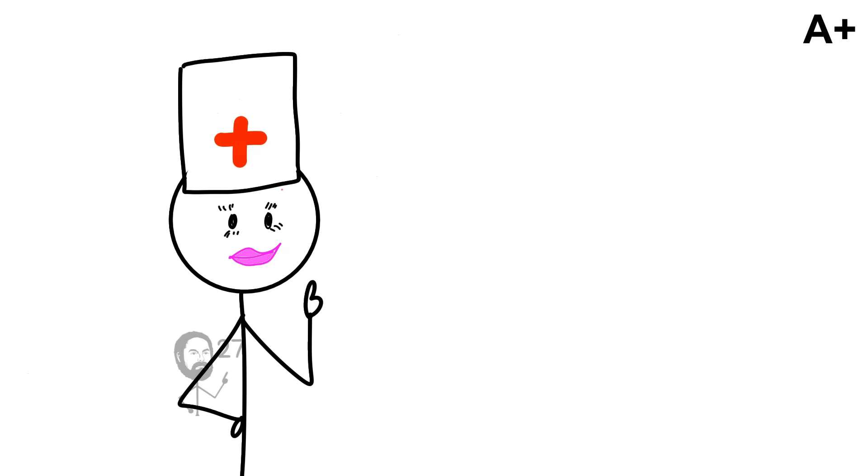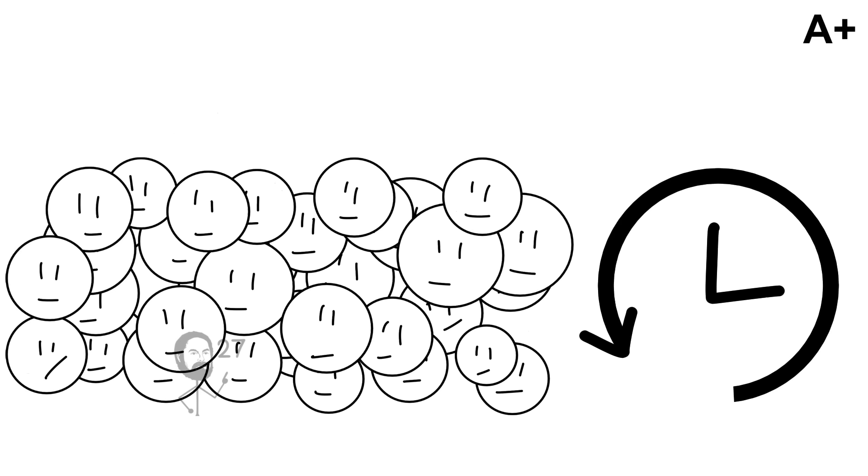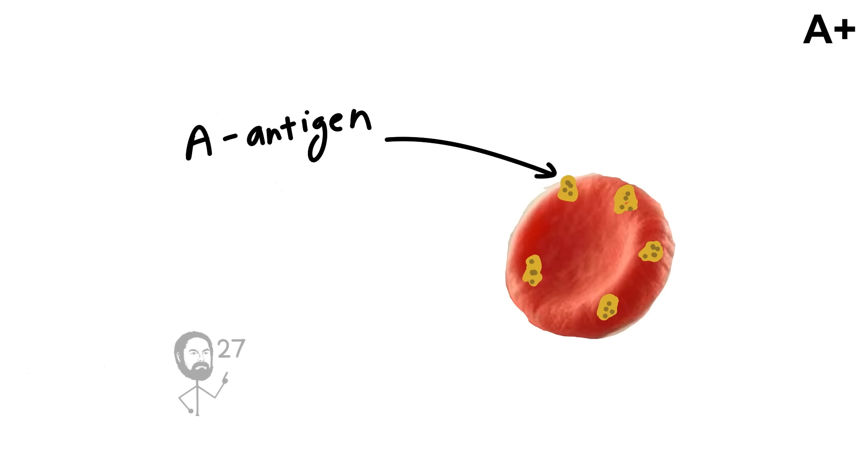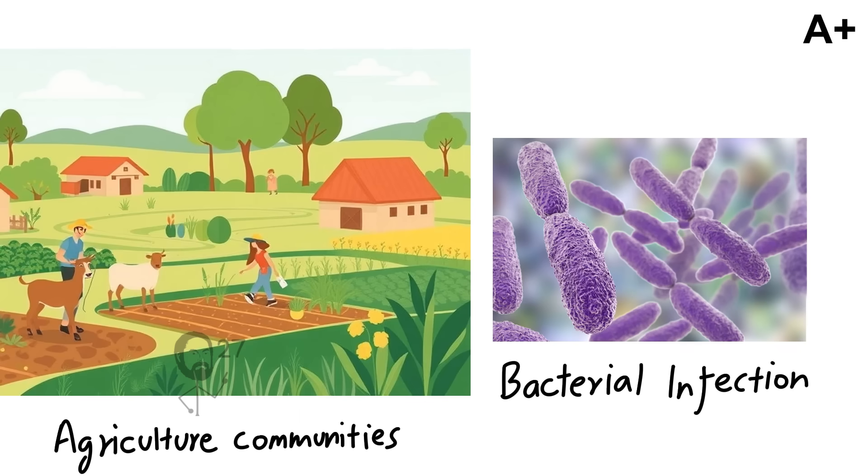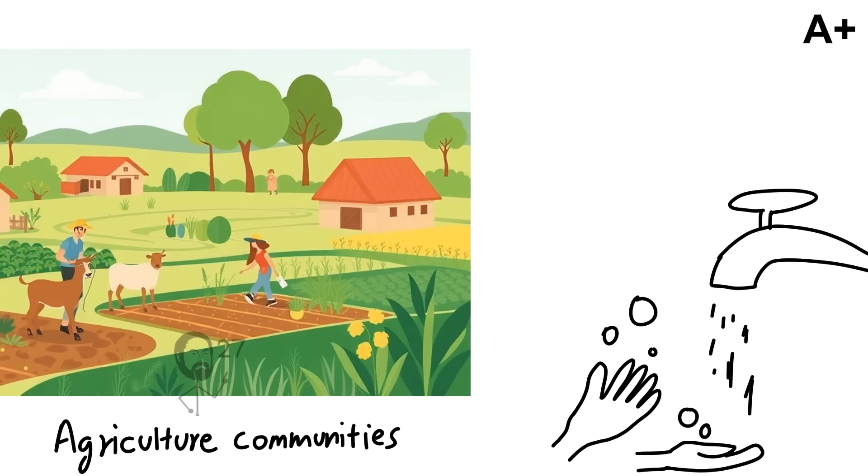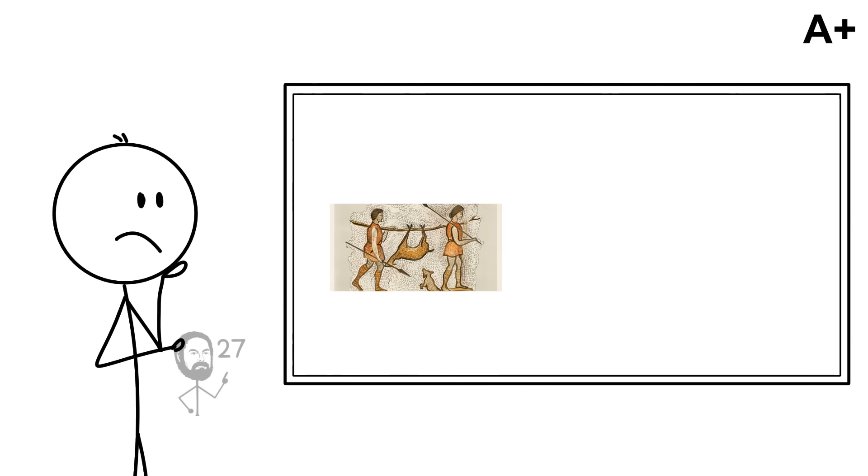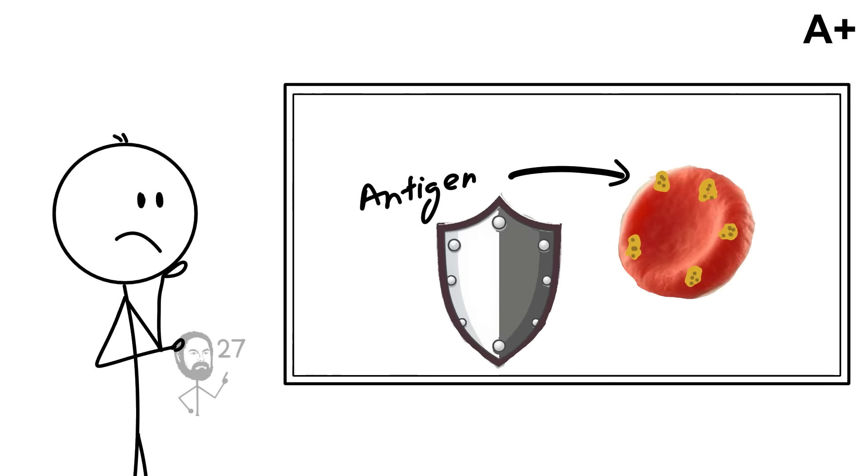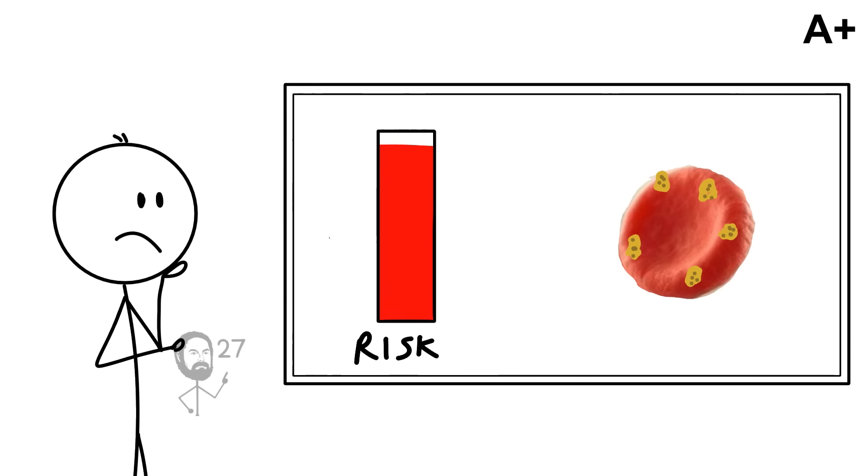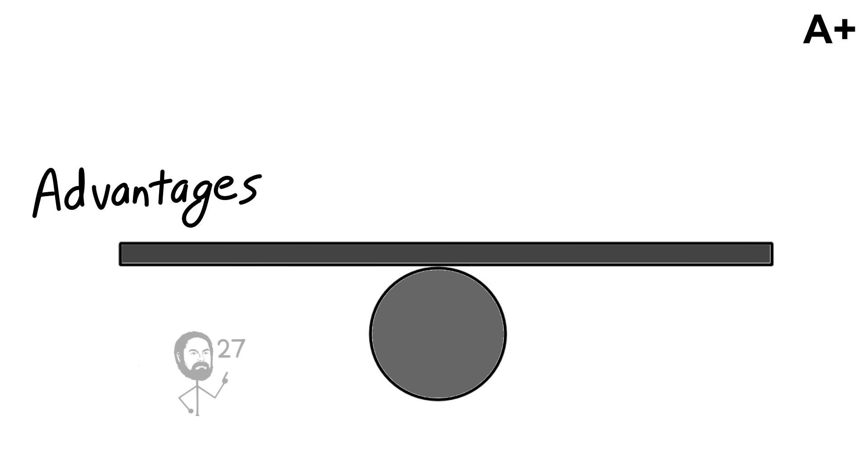Beyond its medical role, type A carries evolutionary and immunological traits that shaped how populations adapted through history. The A antigen has been linked to a stronger immune response against certain bacterial infections, particularly those that spread in dense agricultural communities where hygiene challenges were greater. This may explain why the frequency of type A increased as humans transitioned from hunter-gatherer societies to settled farming civilizations. However, the same antigen that provides these defenses has also been associated with higher risks of clotting disorders and certain cardiovascular conditions, showing how evolution balances advantage with vulnerability.